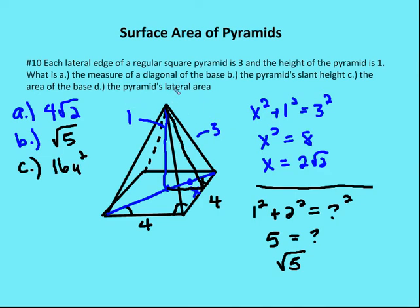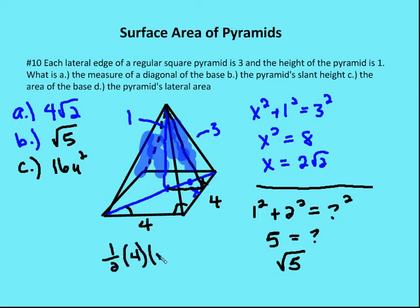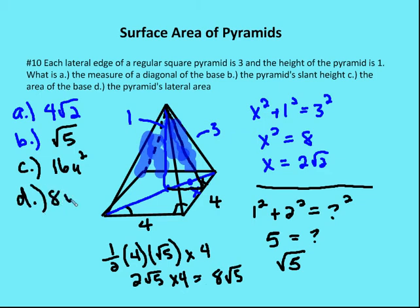Finally, they want us to find the pyramid's lateral area. That's the sum of each of the triangles — we have four of them in the square pyramid. The base of each triangle is four and the height equals the slant height, which is root five. The area of one triangle is one-half of four times root five, which is two root five. Multiply by four triangles: two root five times four equals eight root five. So the answer to D is eight root five.